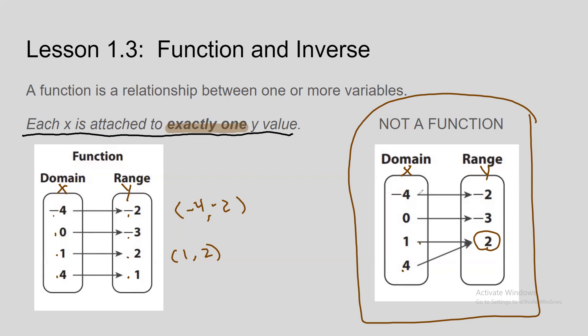How this becomes not a function is if negative four now leads to two y values. If we add that connection, it's not a function — because negative four leads to two different y values. We can have multiple x's lead to the same y value, but we cannot have one x lead to multiple y values.